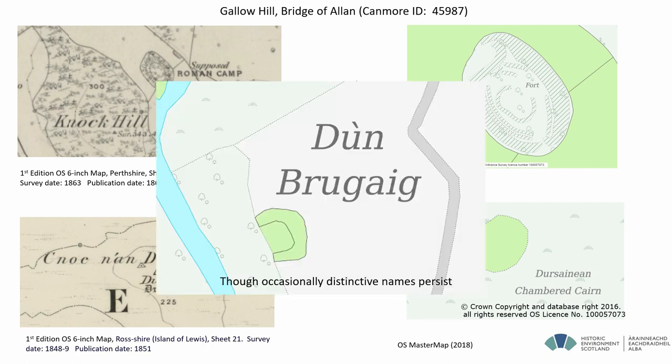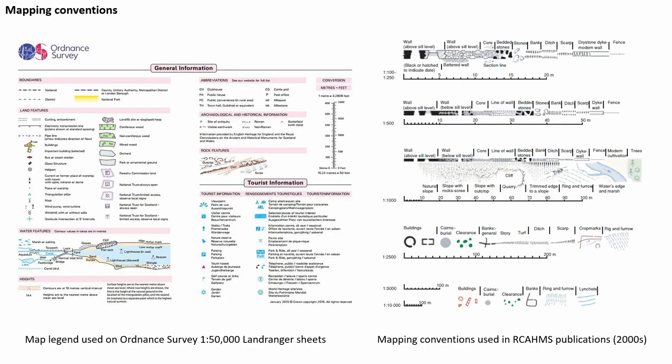Occasionally the Ordnance Survey still persists with distinctive names — Stonehenge will appear on the map of Stonehenge, Aden Castle, and then Dungrugge. These are consistent data terms that we use in our monument thesaurus, or can be mapped to those terms. Ordnance Survey have a range of style shapes or keys and conventions to depict a range of archaeological and non-archaeological features on the map.